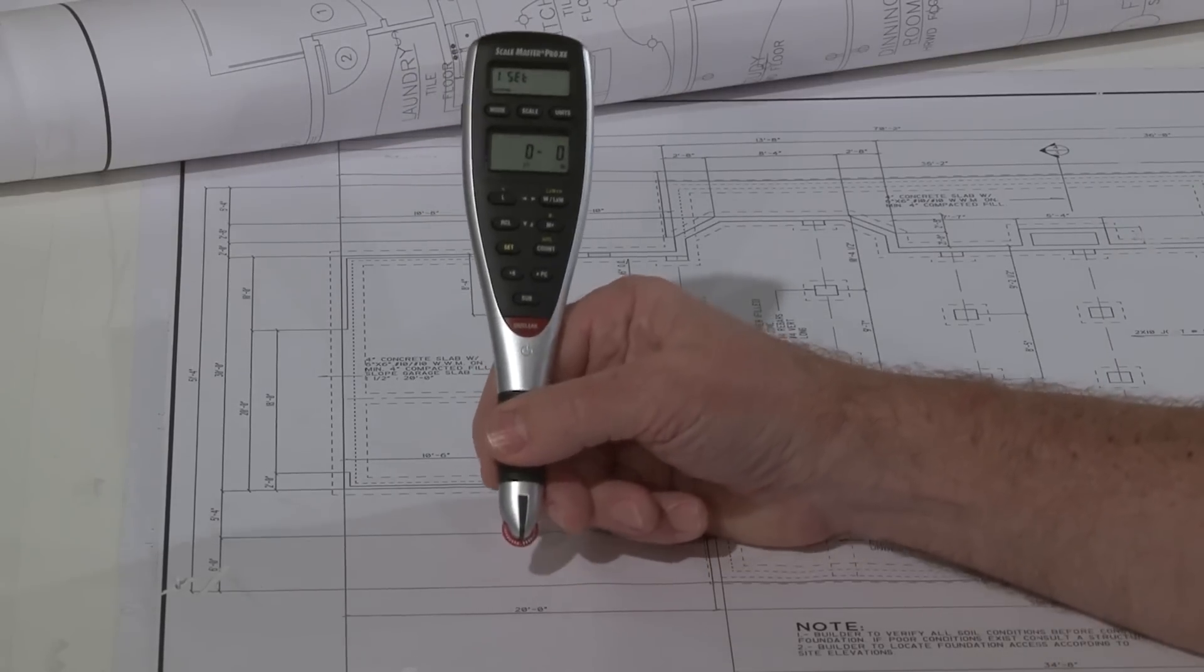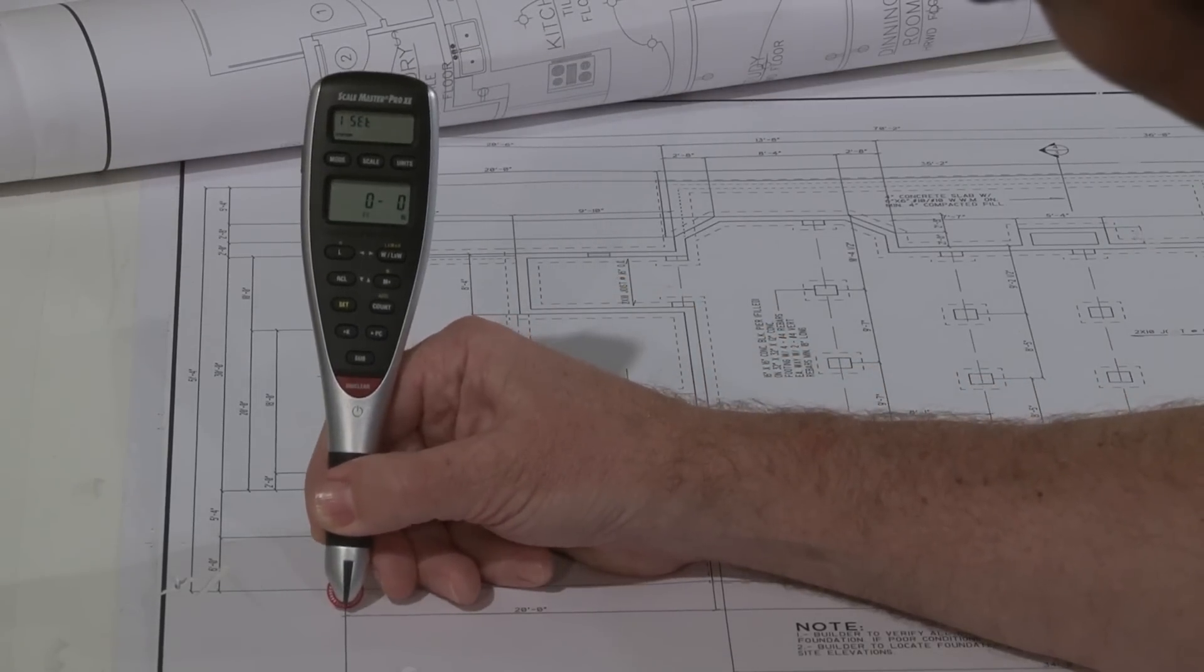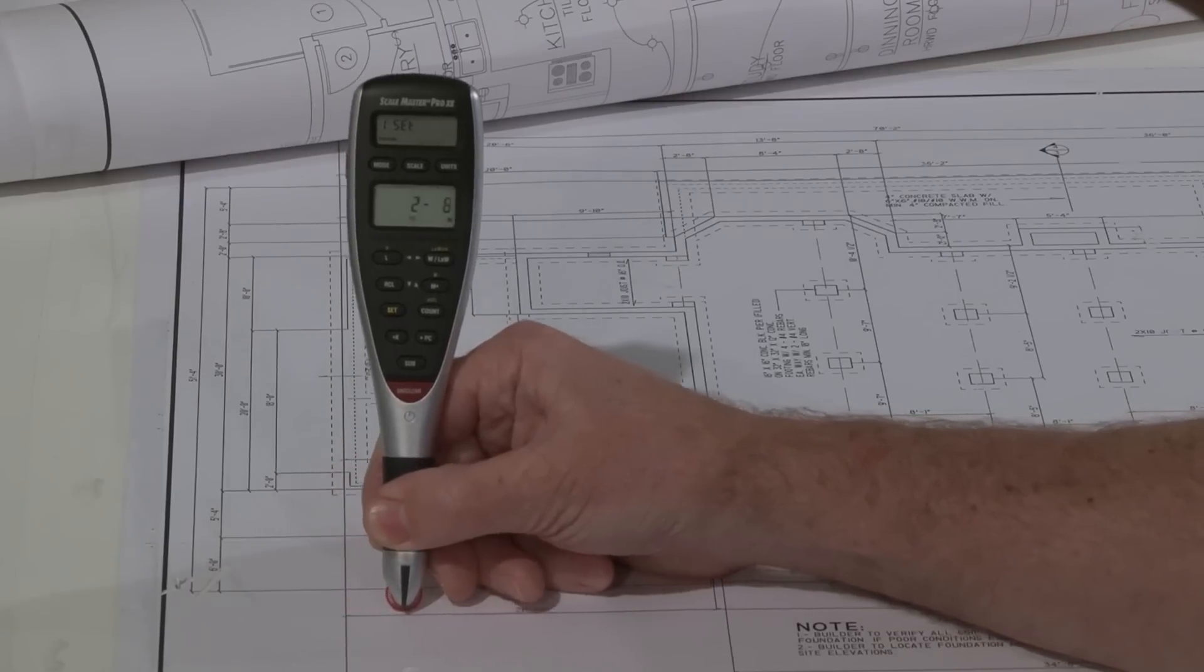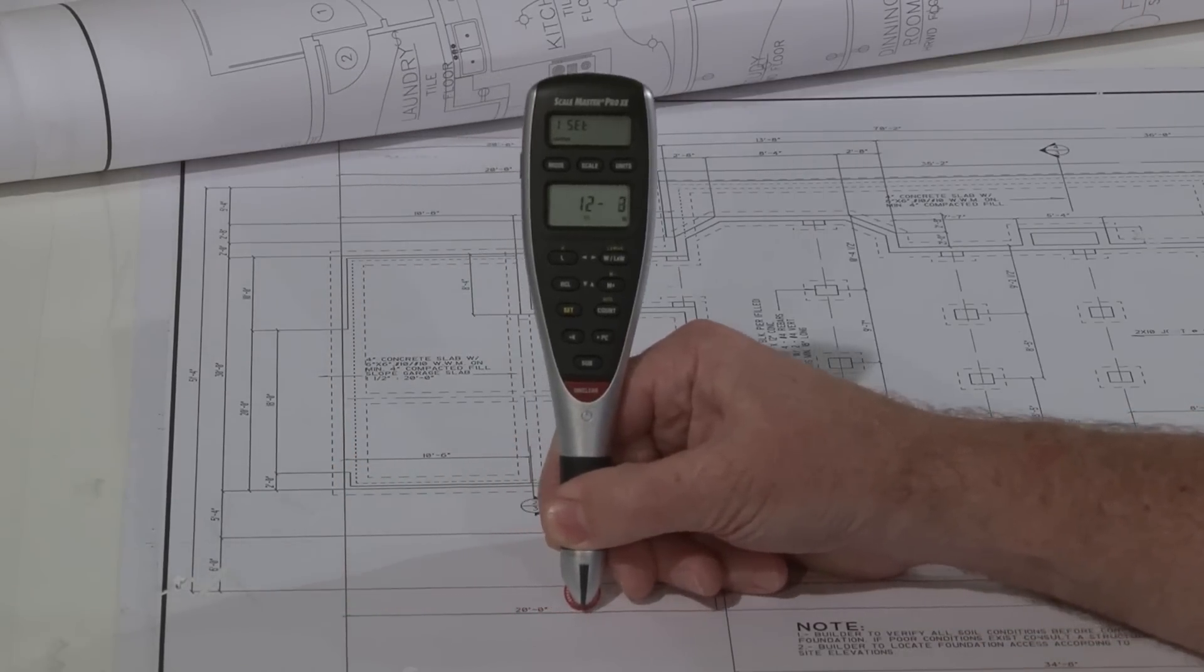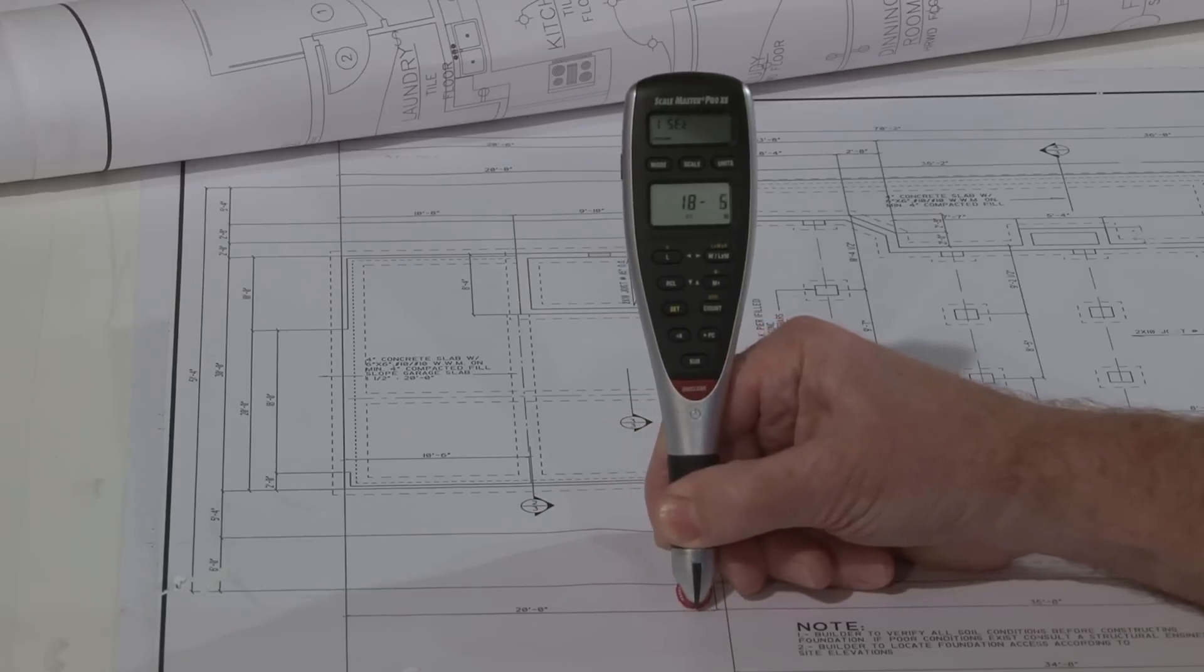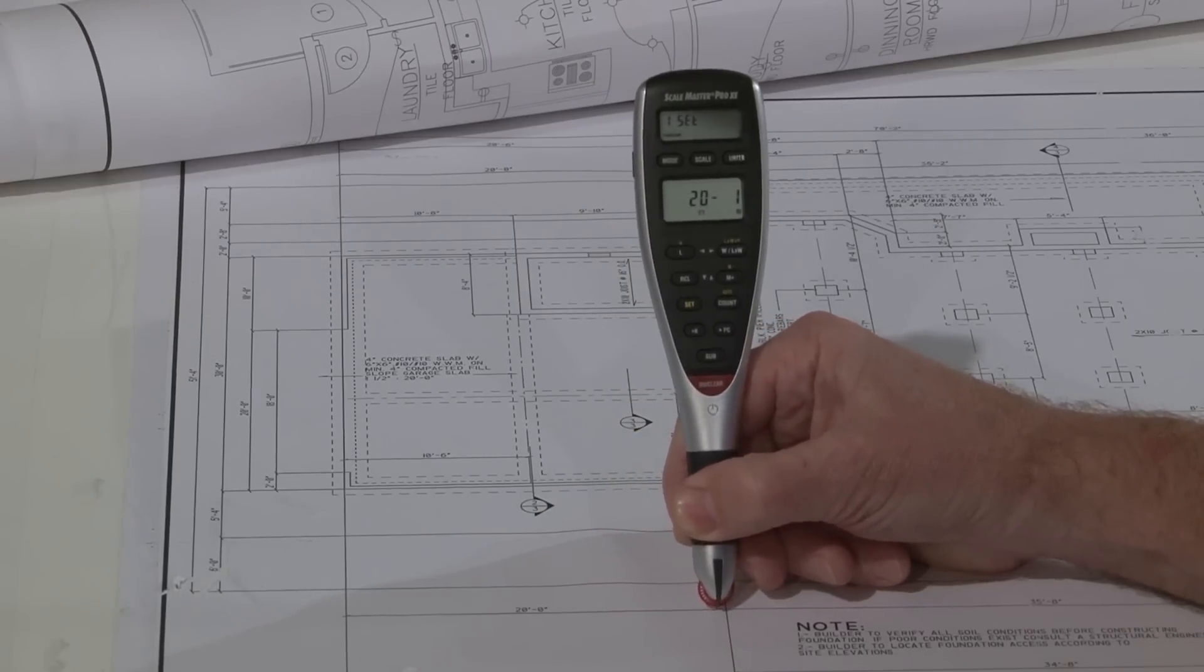Now to confirm that, I'll come back to that same place and re-roll that distance. Line up the pointer and roll along the line as straight as possible, and get to the end right there.